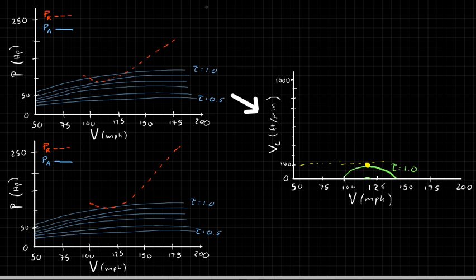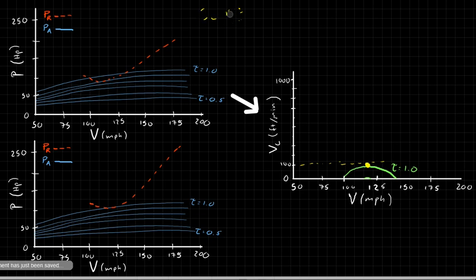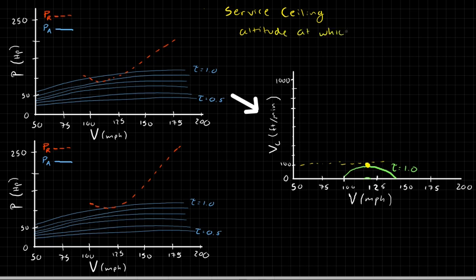The altitude at which this occurs is known as the service ceiling. The service ceiling is the altitude at which the maximum rate of climb — V_C max — equals 100 feet per minute. Every aircraft has a service ceiling: a point at which it cannot climb faster than 100 feet per minute.